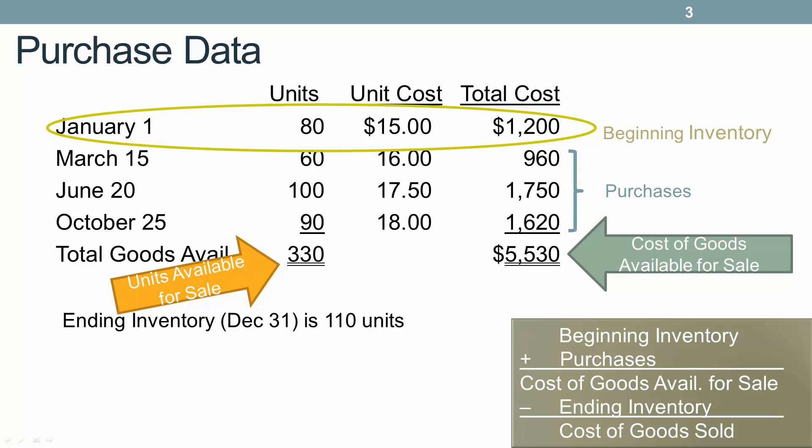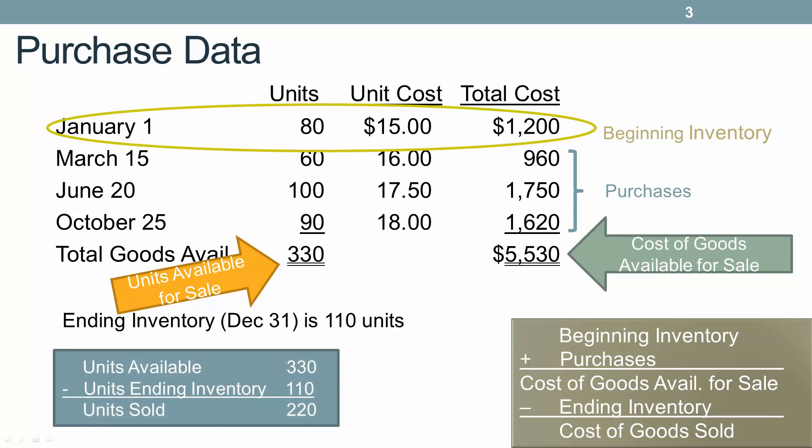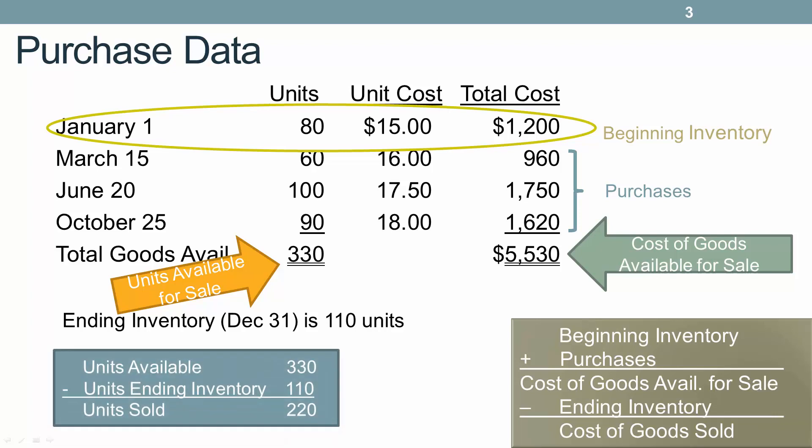Our problem tells us that ending inventory was 110 units. So if we had 330 units available for sale and 110 in ending inventory, then we know we must have sold 220 units. The number of units doesn't change — what changes is the value we put on those units for our cost of goods sold.